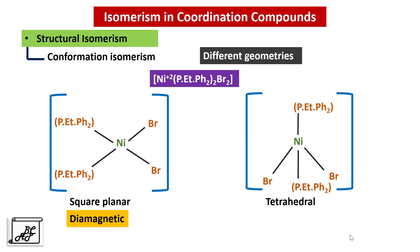If it is square planar geometry, it is diamagnetic in nature. If it has a tetrahedral geometry, it will be paramagnetic in nature. These two complexes have the same formula but different geometries — one is square planar and one is tetrahedral. They differ in conformation, therefore this type is called Conformational Isomerism.